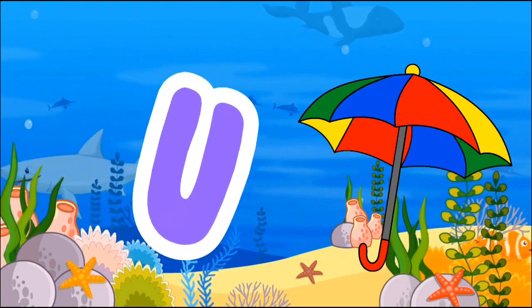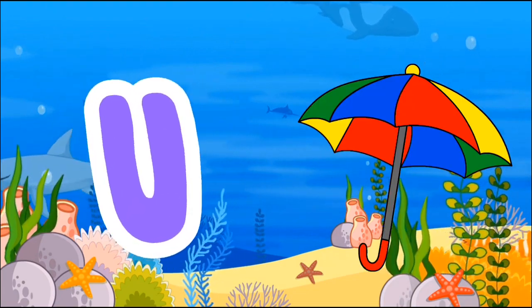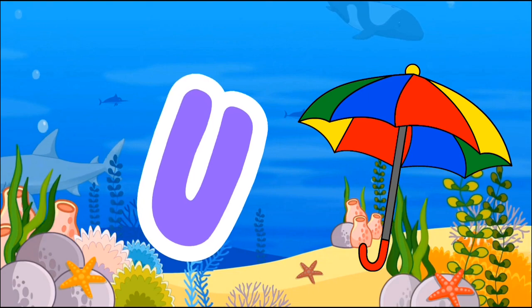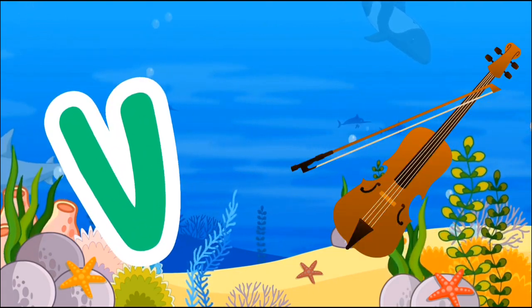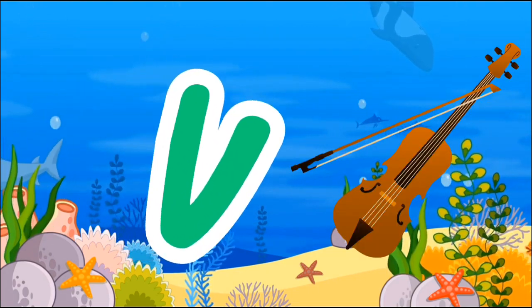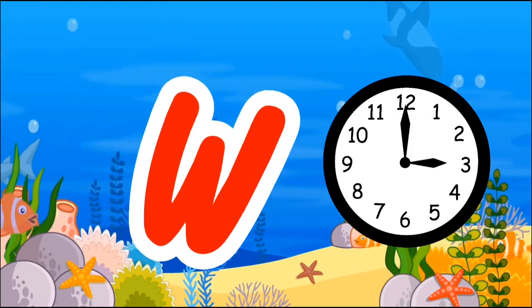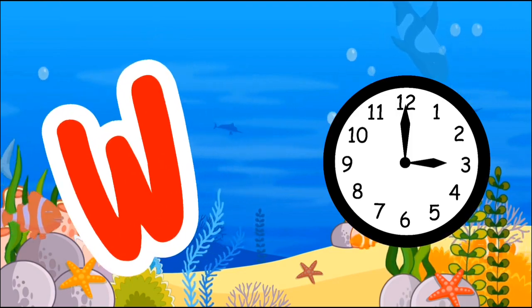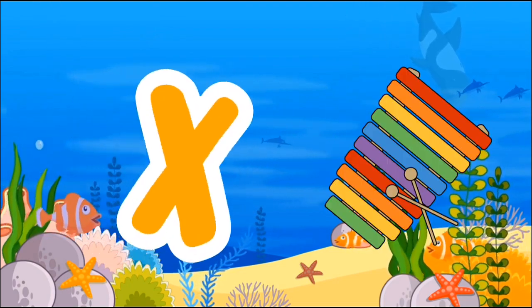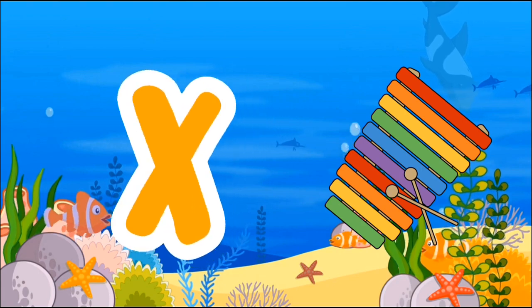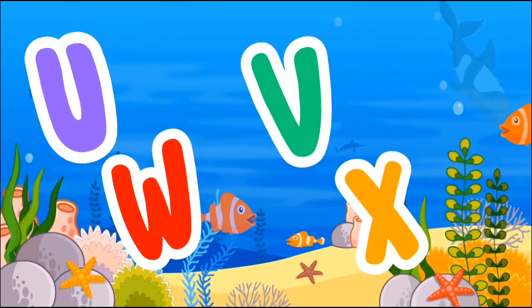U is for umbrella, u-u-umbrella. V is for violin, v-v-violin. W is for watch, w-w-watch. X is for xylophone, z-z-z-xylophone.